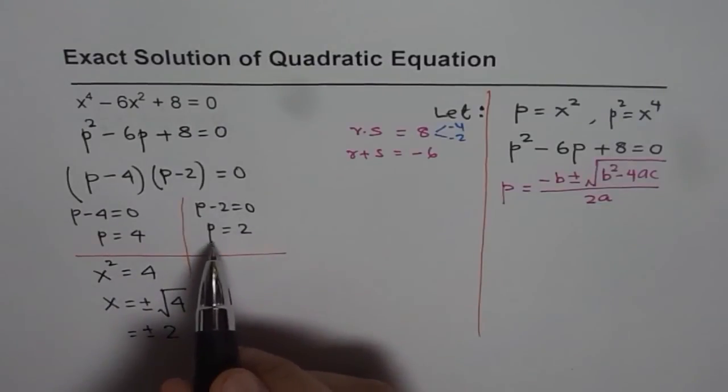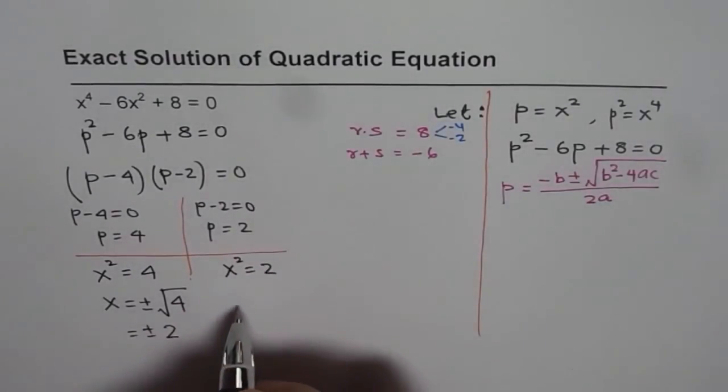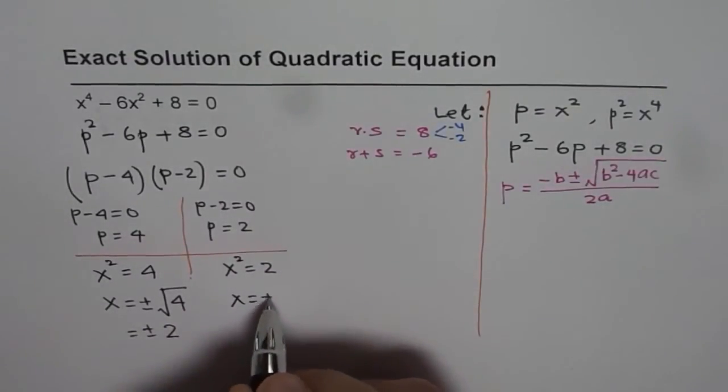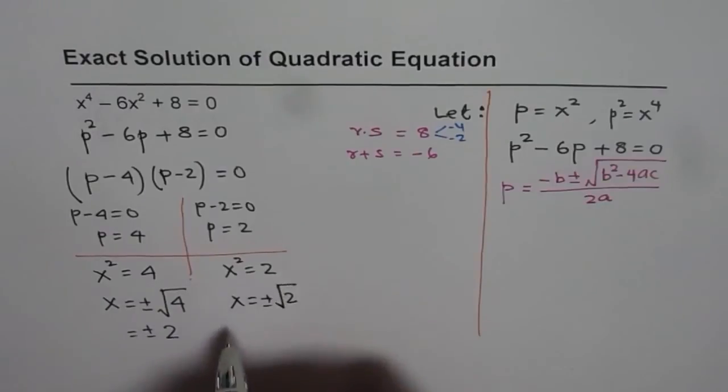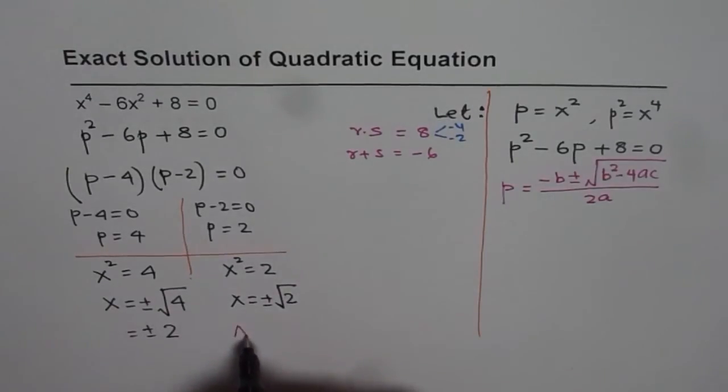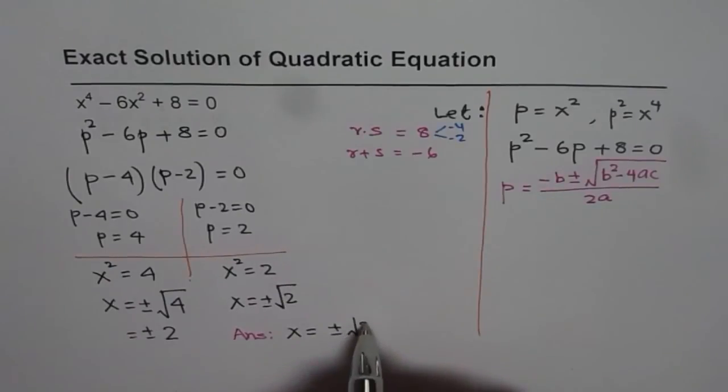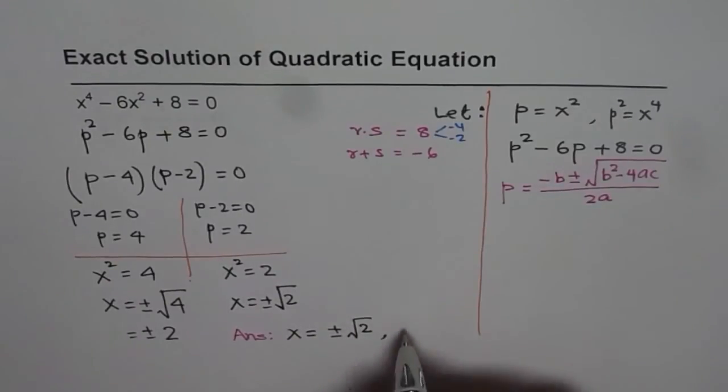How about p equals 2? In that case, x squared equals 2, and then x equals plus or minus square root of 2. These are the answers when p equals 2. We get four solutions to this equation. Our final answer is: x equals plus or minus square root of 2, or x equals plus or minus 2.